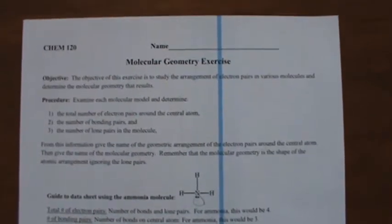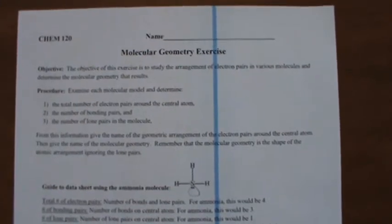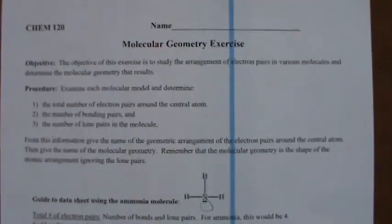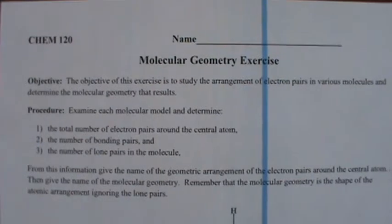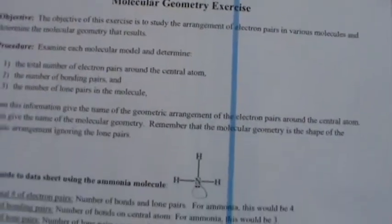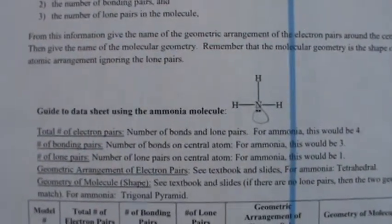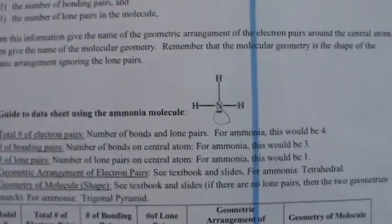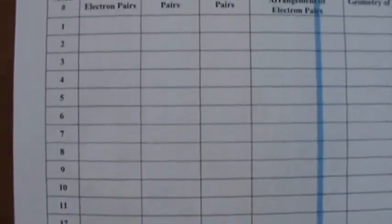Hello and welcome to our last lab for online General Chemistry 1. It's going to be a molecular geometry exercise where we're going to be really looking at molecular structure. Here's an example — I apologize, my printer had this weird blue line going through it. It shows you an example for ammonia, and here you'll see that there are 12 models that you're going to be doing.